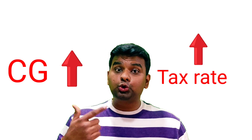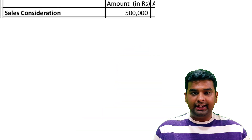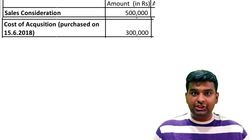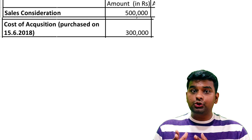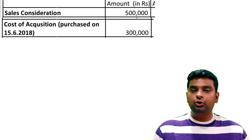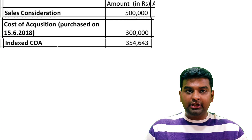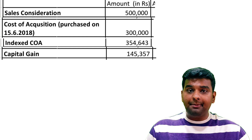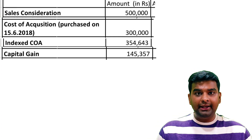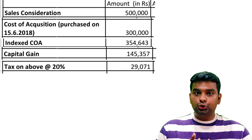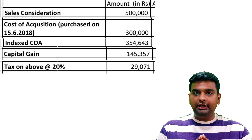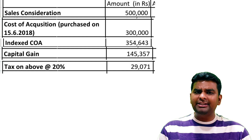So on one hand, there will be an increase in capital gains because of no indexation, and on the other hand, the tax rate applicable will also be higher. Let us understand this provision with an example. Suppose Mr. A has purchased a debt mutual fund in the year 2018-19 for Rs. 3 lakhs. In the year 2022-23, he sold this fund for Rs. 5 lakhs. As per the old tax regime, indexation benefit was available. The indexed cost of acquisition of Rs. 3 lakhs comes to Rs. 3,54,643, thereby giving long term capital gains of Rs. 1,45,357. On this capital gains, it was subject to flat 20% tax, thereby the tax payable was Rs. 29,071.